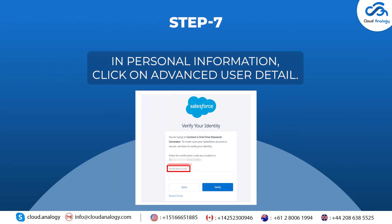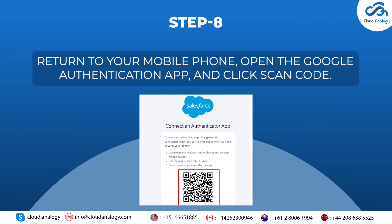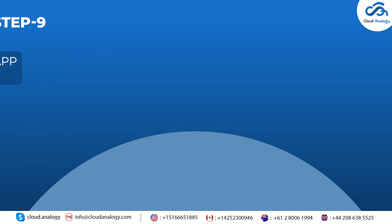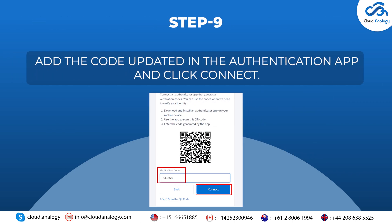Step 7: It will redirect to the adding verification code page. Now go back to your registered Gmail, copy the code, and paste it into the verification code box. Click Verify. Step 8: Return to your mobile phone, open the Google Authenticator app, and click Scan Code. Step 9: Add the code updated in the authentication app, and click Connect.